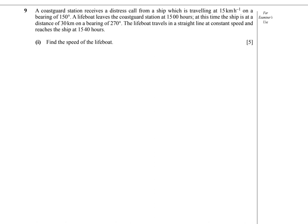Question 9. This question is from the topic Vector and Relative Velocity. A Coast Guard station receives a distress call from a ship which is travelling at 15 km per hour on a bearing of 150 degrees.